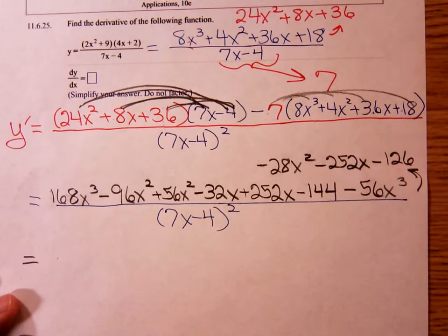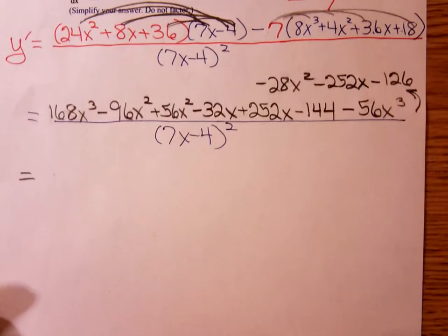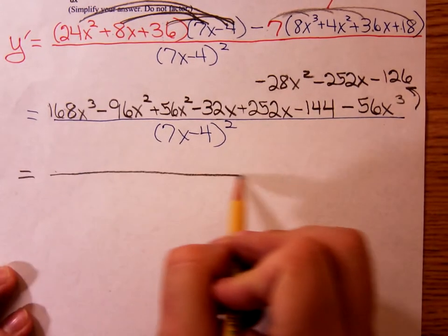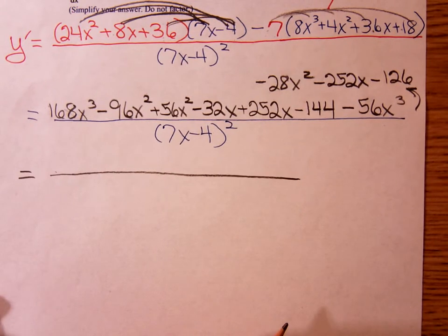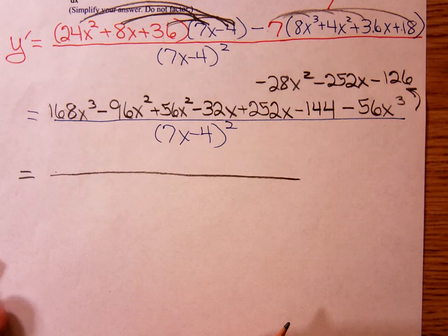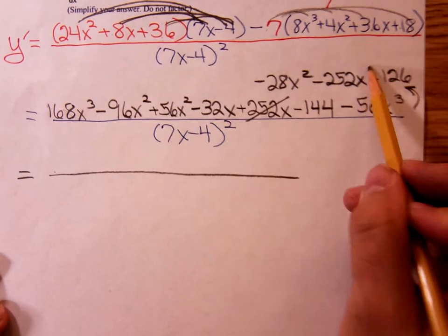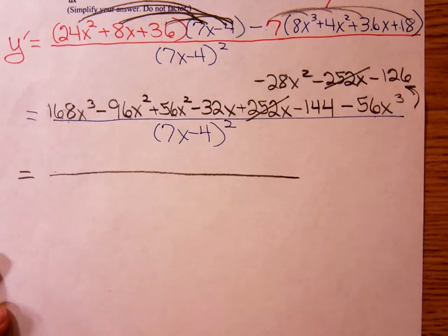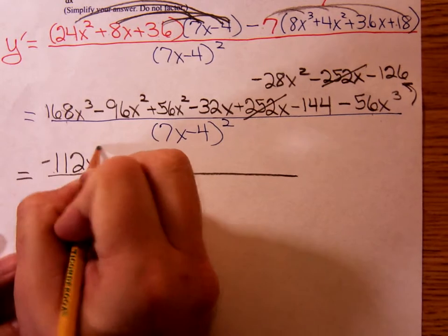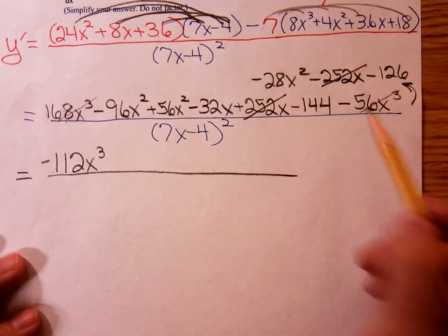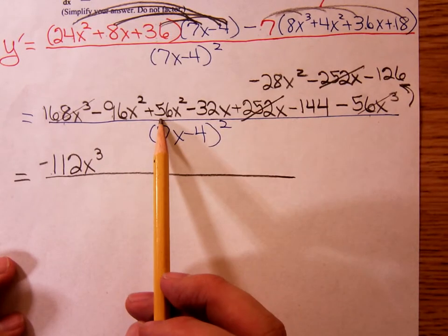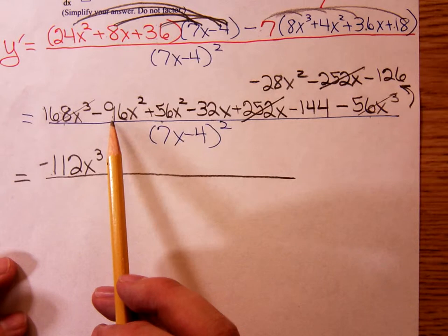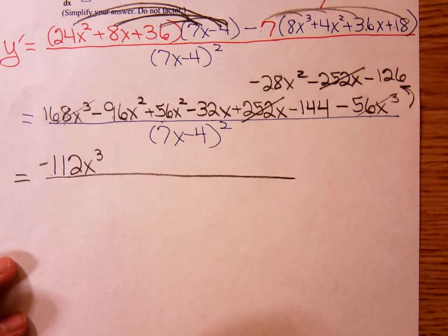And continuing on. I'm going to move that up some. So, there's my fraction bar. Let's see. Which term should go first? I have to... the 252x and the minus 252x. Yep, you're right. We can delete that. But I'm going to put the x cubed terms first. 168x cubed minus 56x cubed gives me 112x cubed. So, we've taken care of the x cubes. Now, the x squares. Negative 96 plus 56. That's a negative 40x squared. Any other x squares?